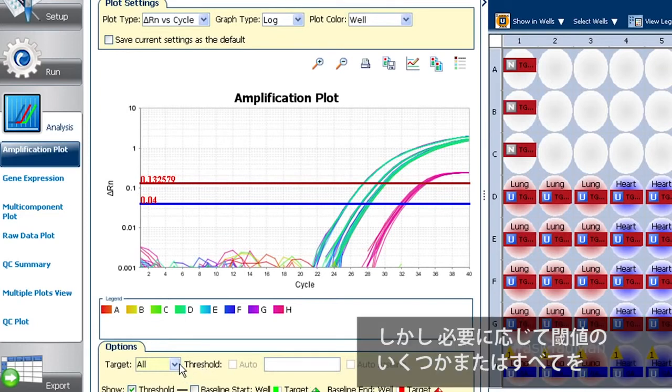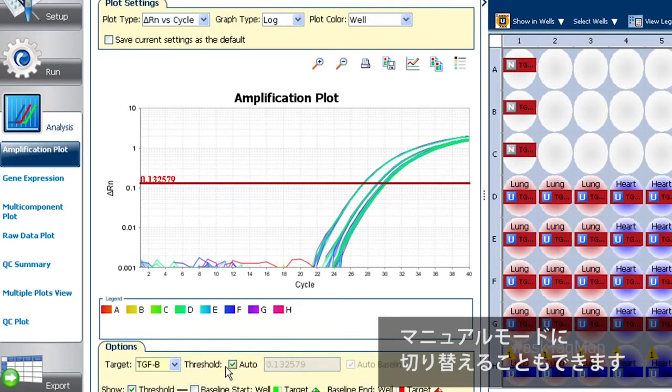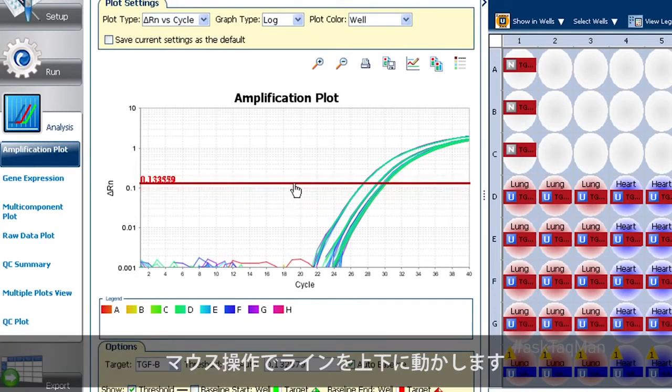If I want though, I can switch any one or all of my thresholds to manual mode, then move the line up or down with my mouse.